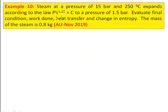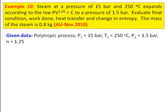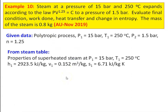Example number 10 from November 2019 question paper: steam at a pressure of 15 bar and 250 degree Celsius expands according to the law PV to the power 1.25 equal to constant to a pressure of 1.5 bar. Evaluate the final condition, work done, heat transfer and change in entropy. Mass of steam equal to 0.8 kilogram. Given data: polytropic process, P1 equal to 15 bar, T1 equal to 250 degree Celsius. From the steam table: H1 equal to 2923.5 kilojoules per kilogram, V1 equal to 0.152 meter cube per kilogram, entropy S1 equal to 6.71 kilojoules per kilogram Kelvin.